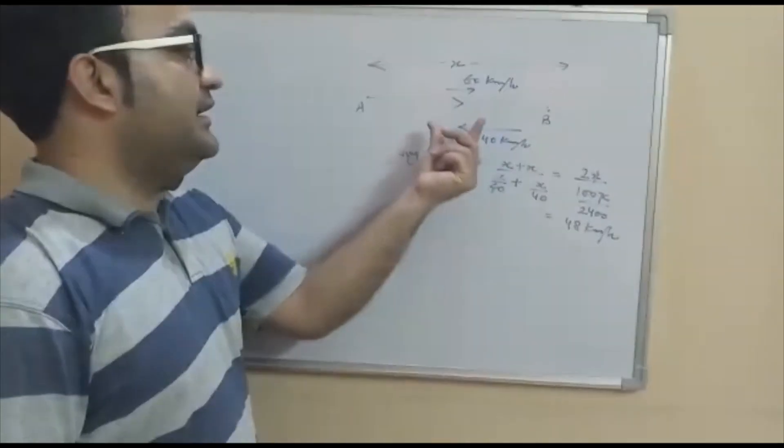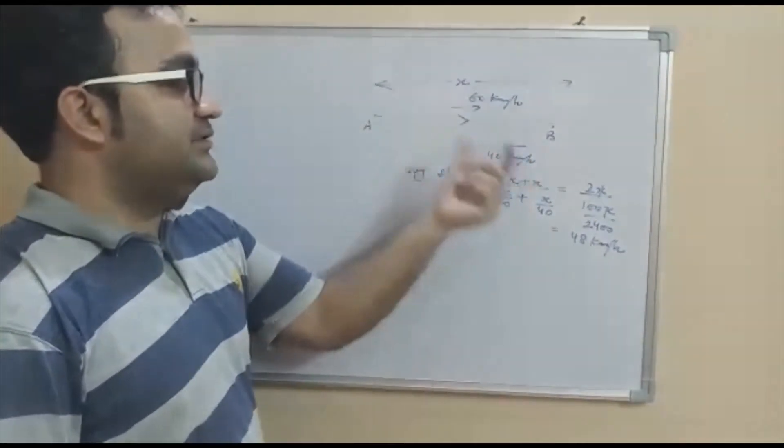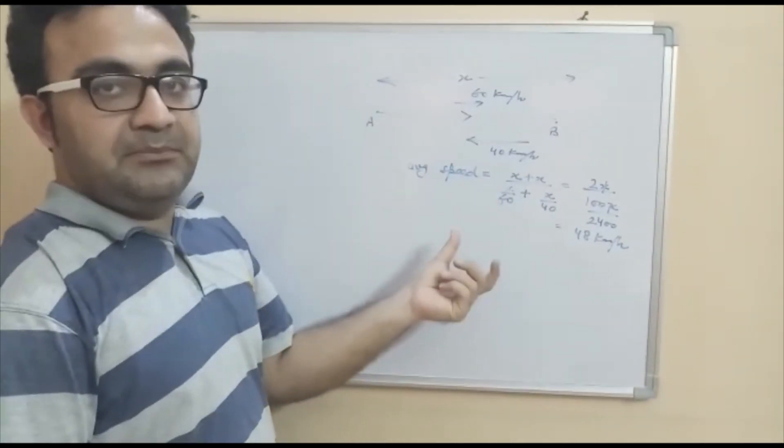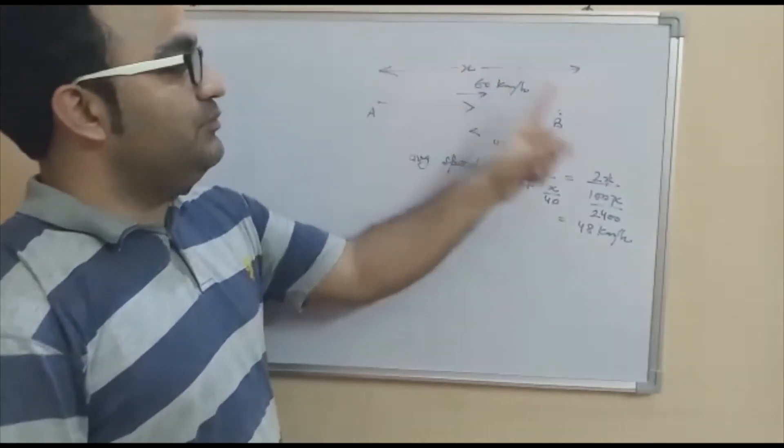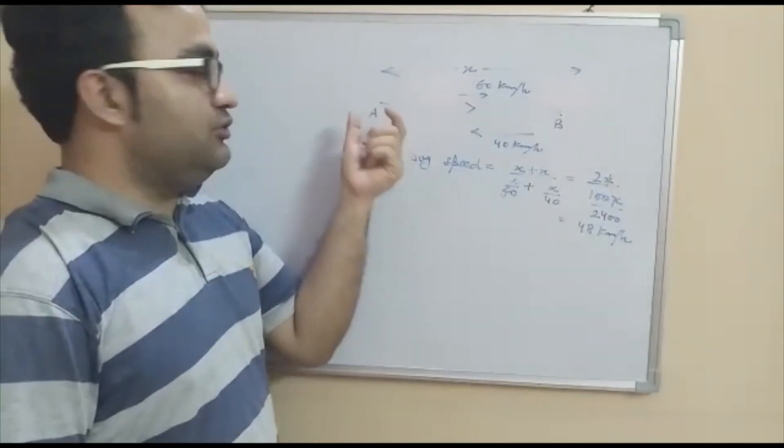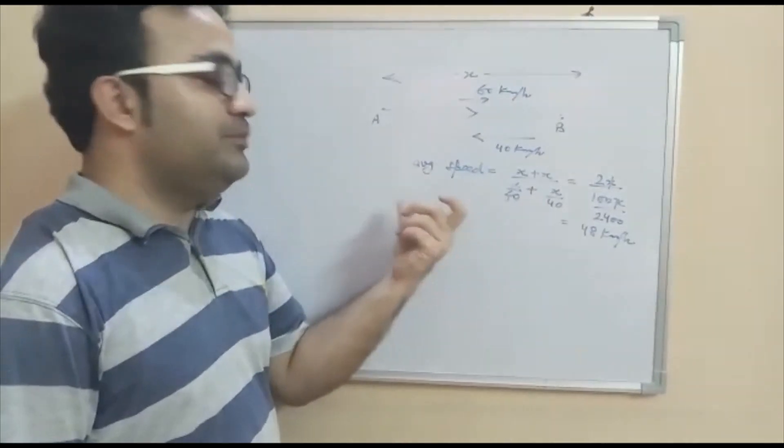But the question comes if they are asked to find the average velocity. Now for average velocity, this is total displacement upon total time. The total displacement is 0 because this is moving from A to B and then B to A. So the shortest path is 0 upon time. So that average velocity would be 0.